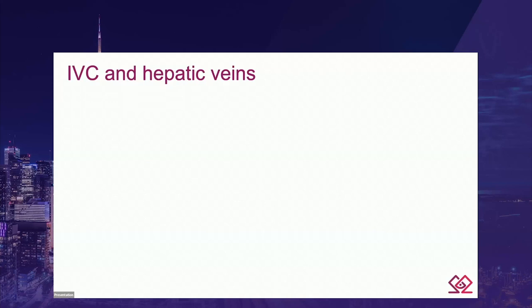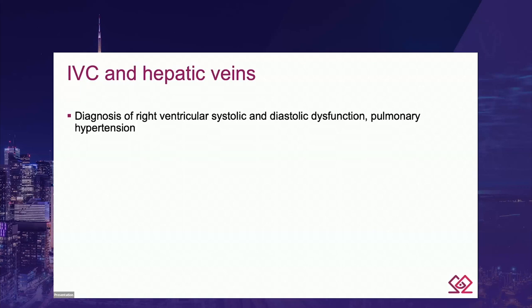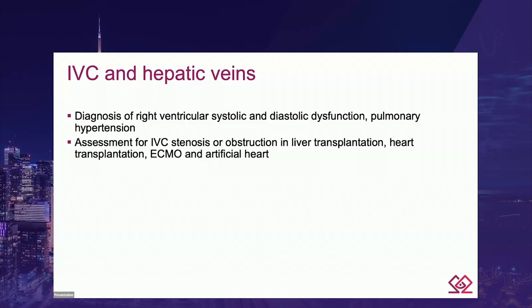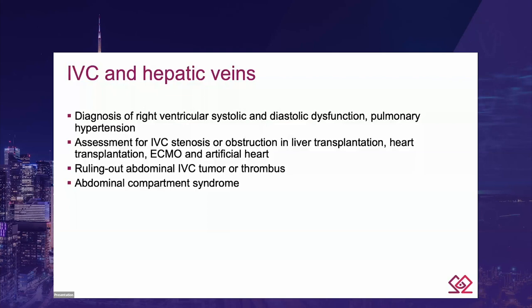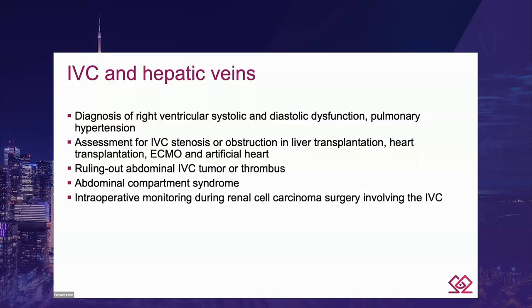IVC and hepatic vein transgastric examination can be useful in many ways: diagnosis of right ventricular systolic and diastolic dysfunction and pulmonary hypertension; assessment for IVC stenosis or obstruction in liver transplantation, heart transplantation, ECMO, and artificial heart; ruling out abdominal IVC tumor or thrombus; when abdominal compartment syndrome is suspected; or intraoperative monitoring during renal cell carcinoma surgery involving the IVC.